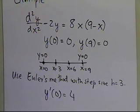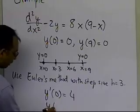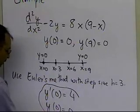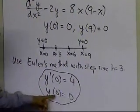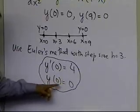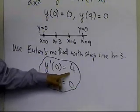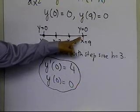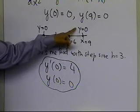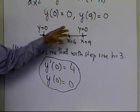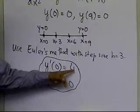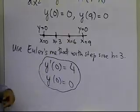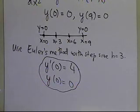We assume y'(0) equal to 4, and in conjunction with y(0) equal to 0, we'll use these two initial conditions to solve the problem. We choose y'(0) equal to 4 and see what value we get for y at x equal to 9. Most probably we won't get 0, so we'll need to adjust this assumed initial value until we get a result close to 0 — that's really the whole point of the shooting method.